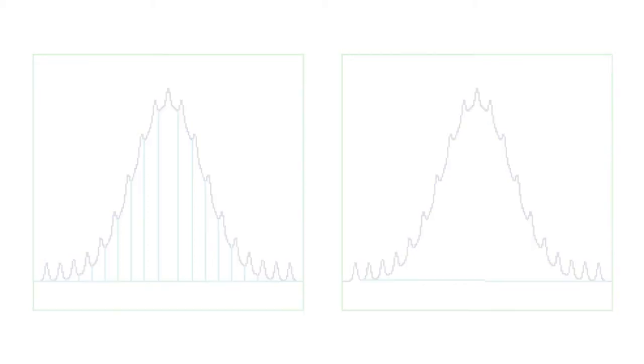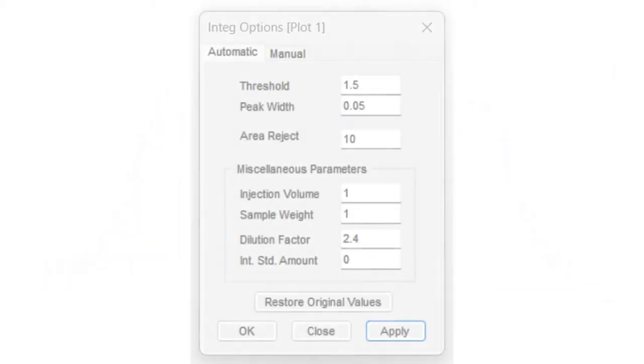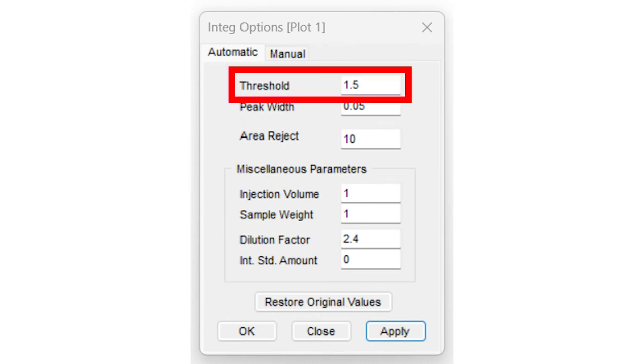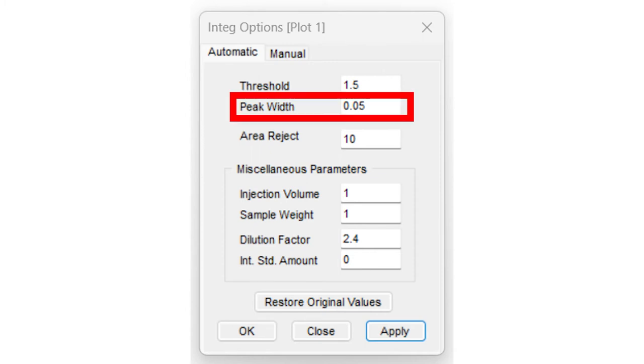ChromPerfect uses two parameters to distinguish peaks and noise. The Peak Detection Threshold parameter, or simply the threshold, determines a minimum area, and the Peak Width parameter determines a minimum width. Candidate peaks must exceed this area and width to be considered further. Fluctuations with less than this area or width are considered noise. The Peak Width parameter is an estimate of the expected peak width and must not be confused with the measured width of actual peaks.